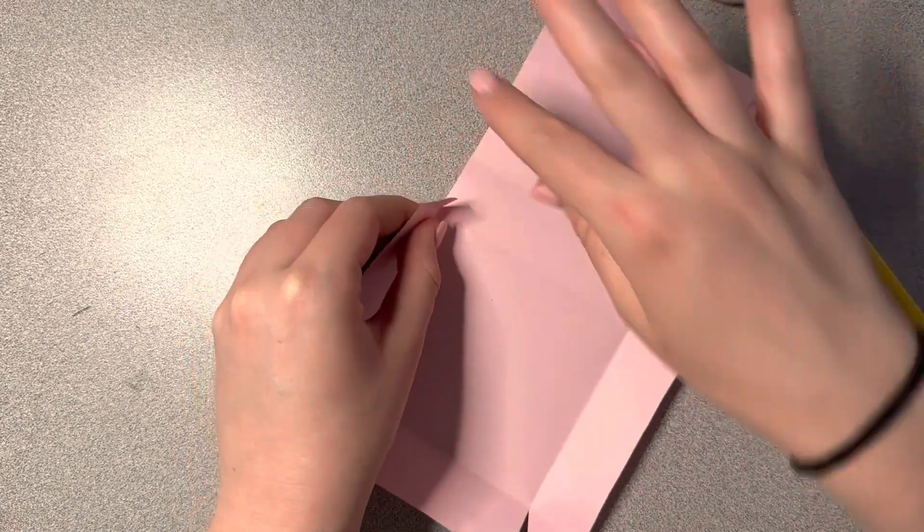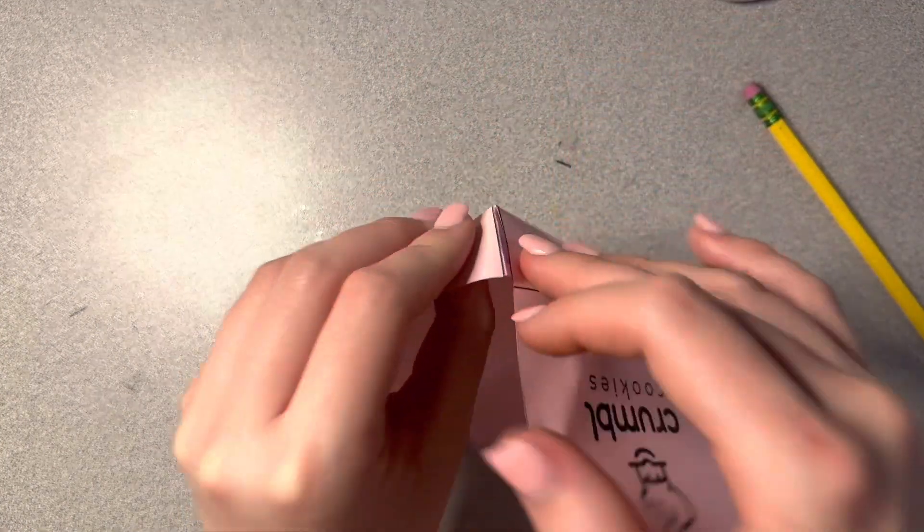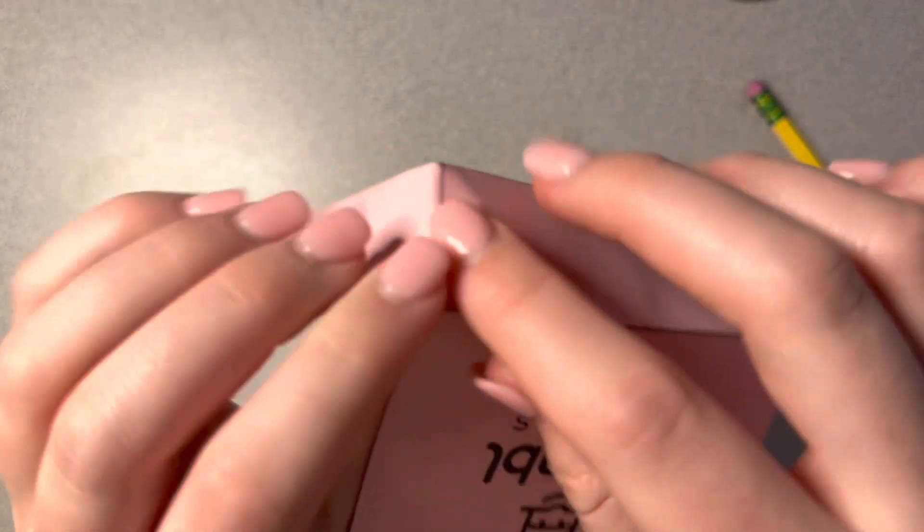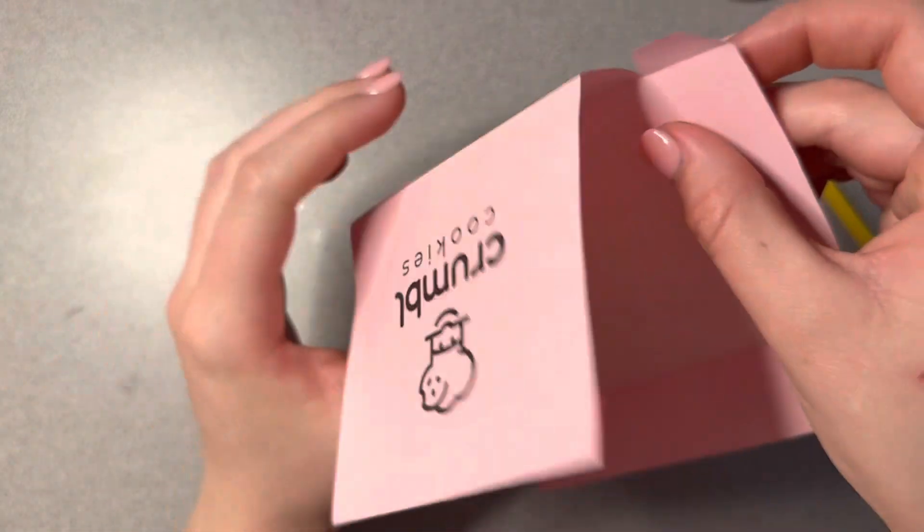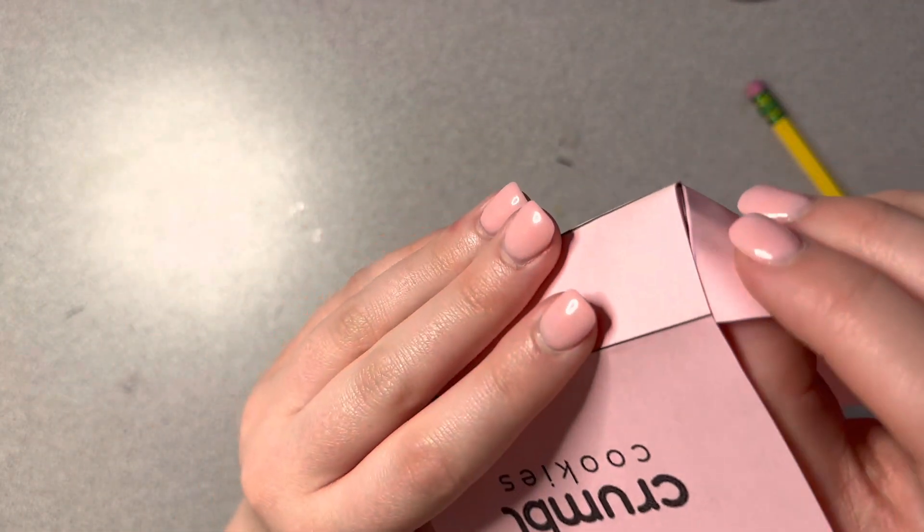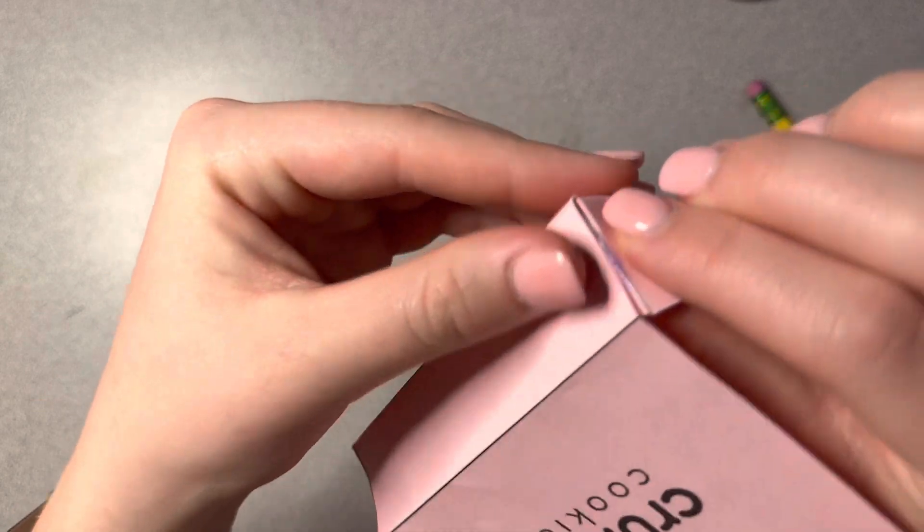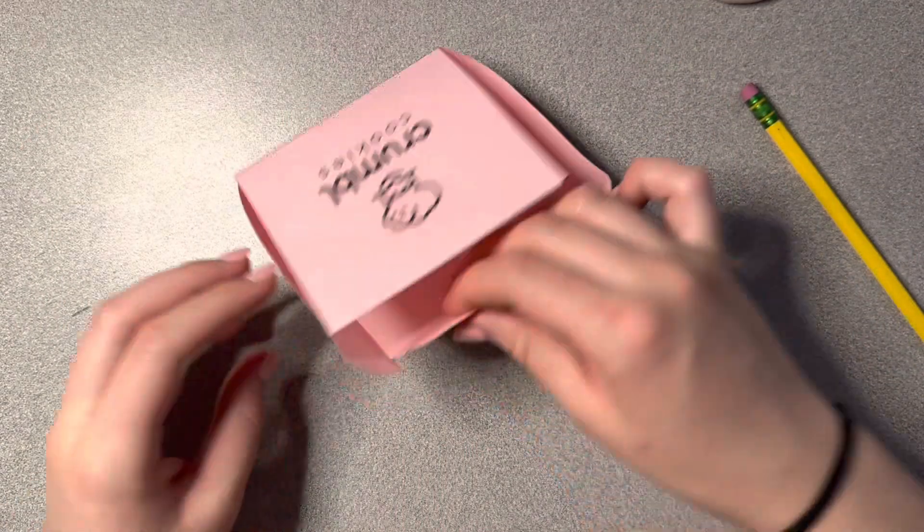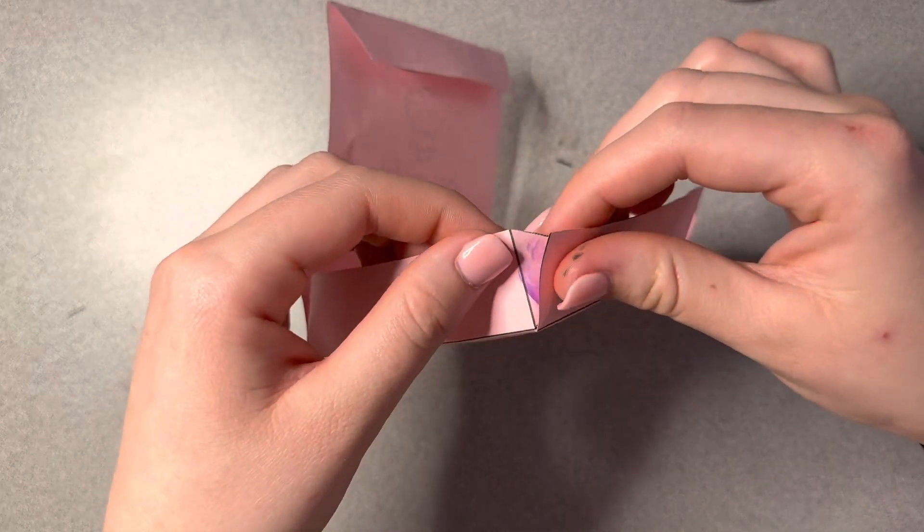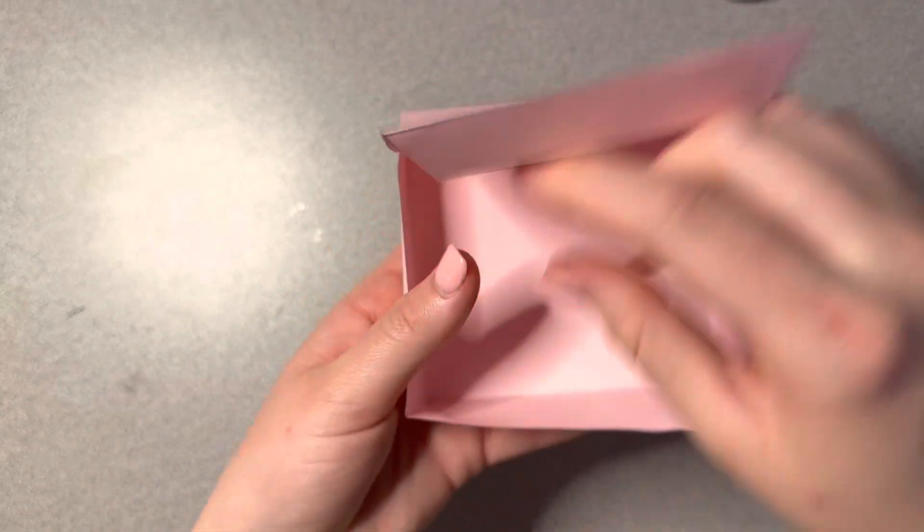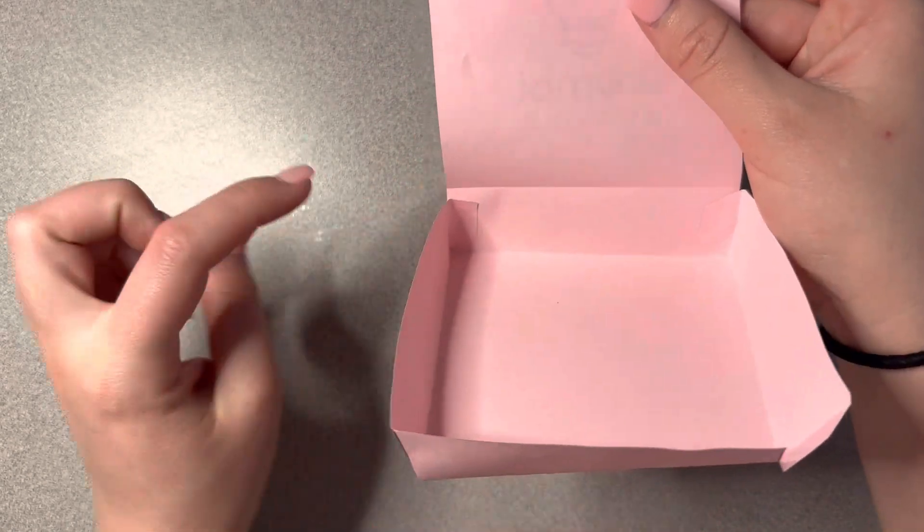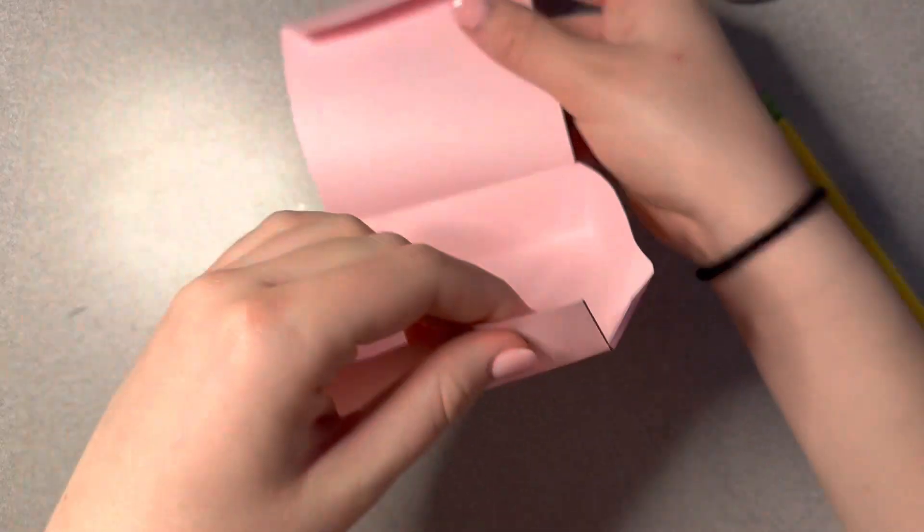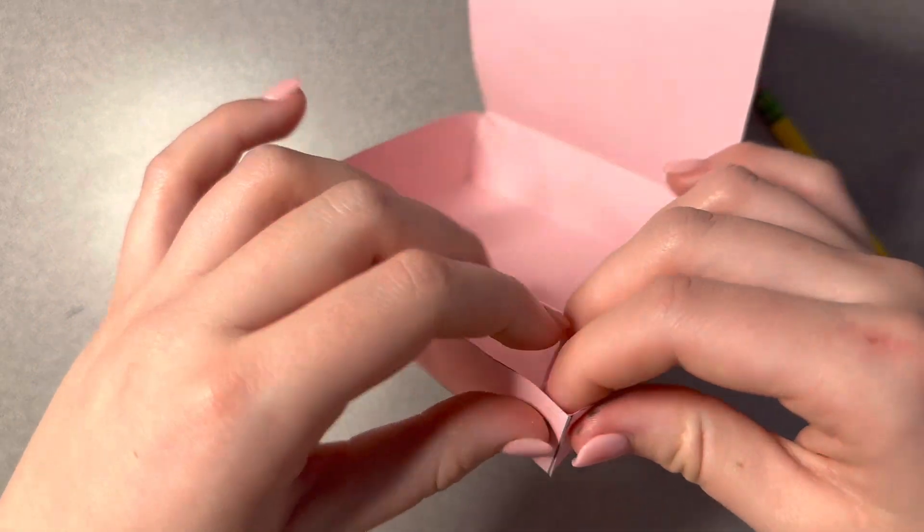And then you're going to fold this part up and stick it. Do the same thing to the side. So the little tabs are getting glued to the inside of your box. You can see that one tab, two. Last one.